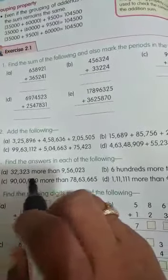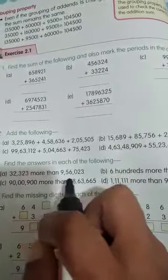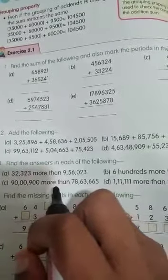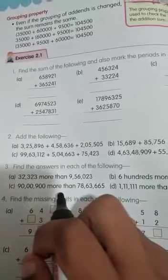Okay, so what question they have given here? 32,323 more than 9,56,023. So what we have to do here? Let us solve this.